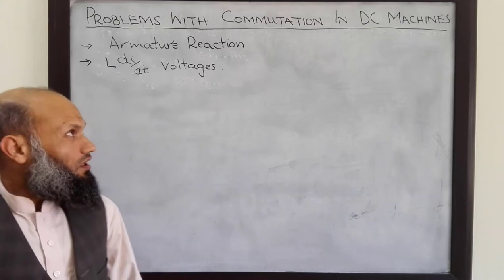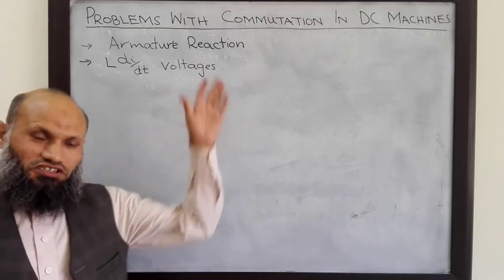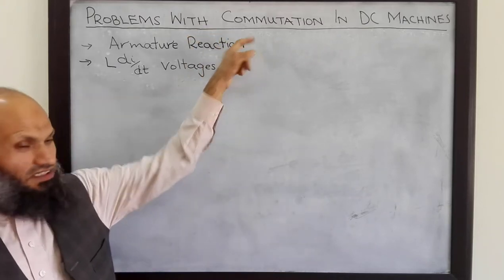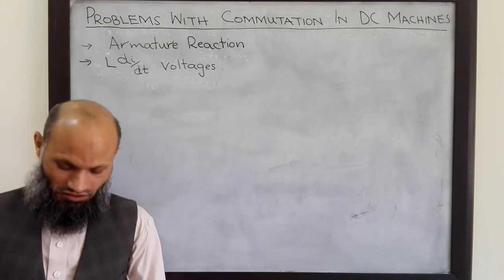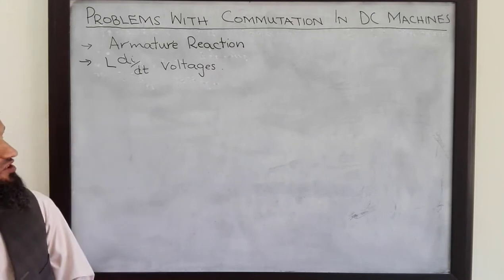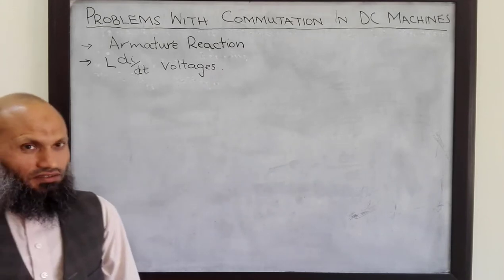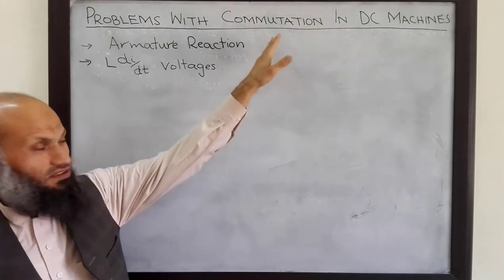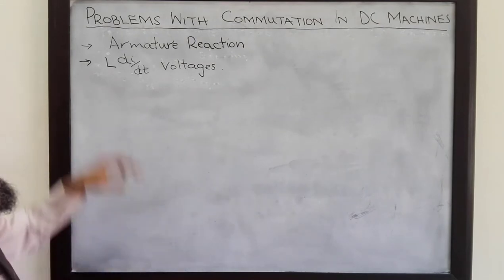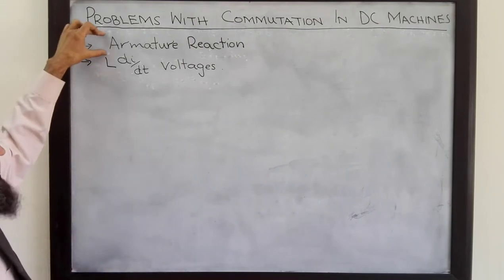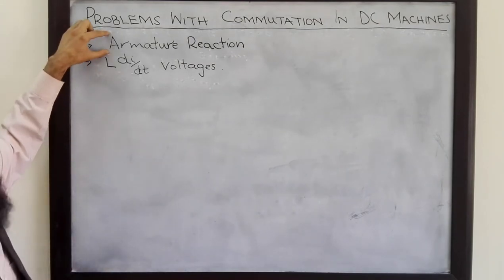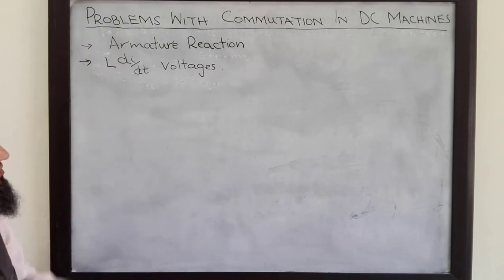Assalamualaikum. Commutation is the process of getting a unidirectional voltage signal out of your DC machine. This commutation process is associated with some problems. In the last lecture, we talked about the first problem, that is the armature reaction.